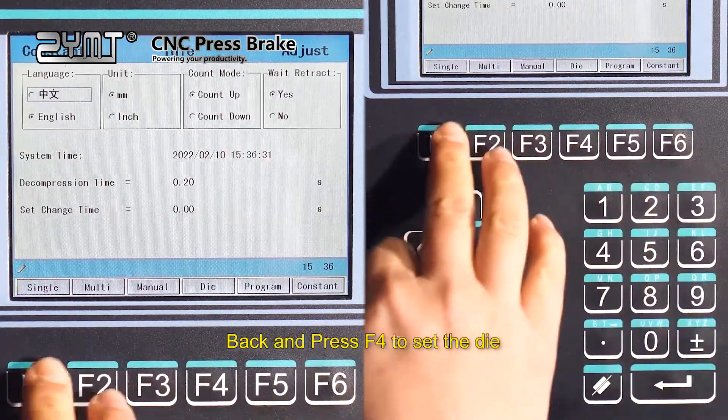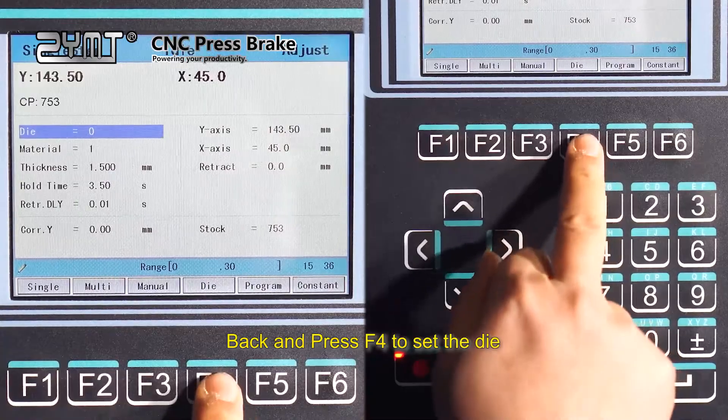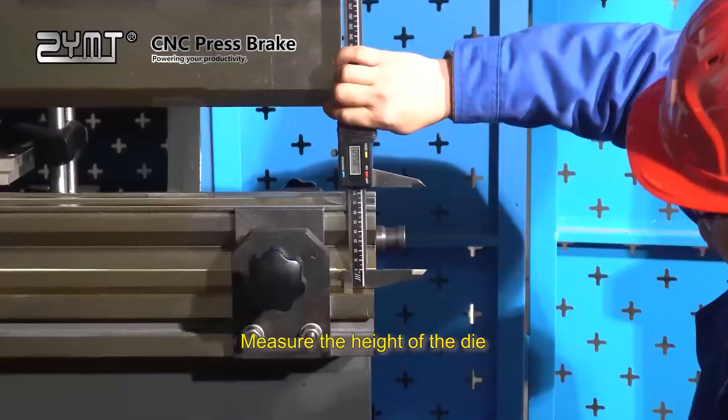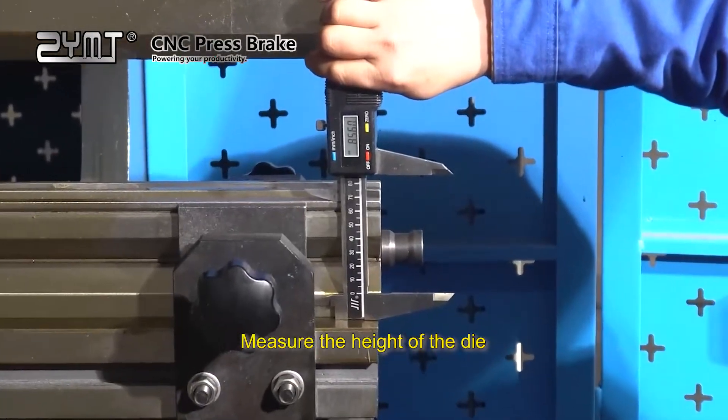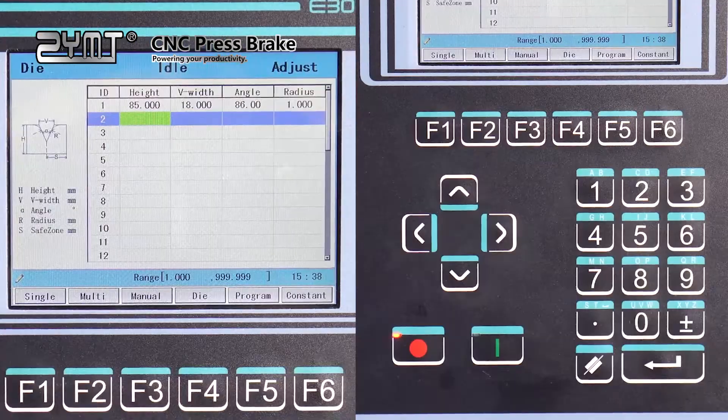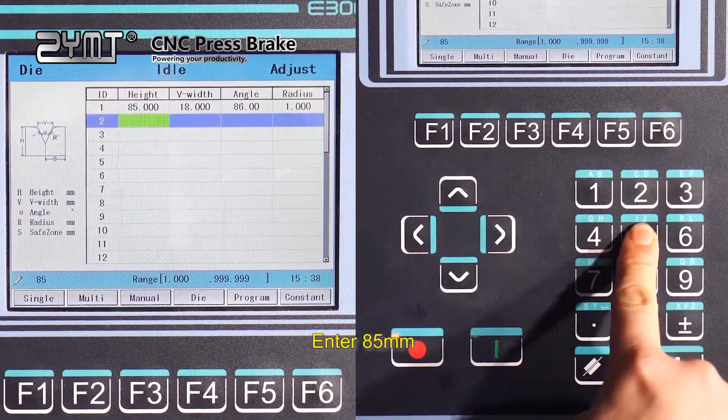Back and press F4 to set the die. Measure the height of the die. 85mm. Enter 85mm.